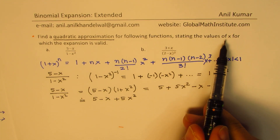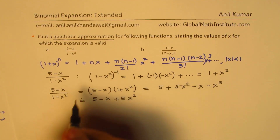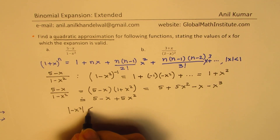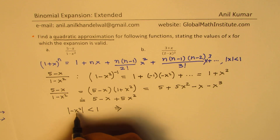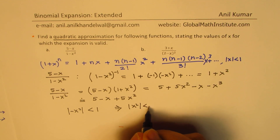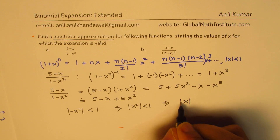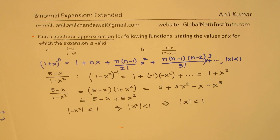Now we need to state the values of x for which the expansion is valid. Since we expanded the term with minus x squared, the absolute value of minus x squared should be less than 1, which means the absolute value of x squared is less than 1. Taking the square root, the absolute value of x must be less than 1. So that is the restriction in our case.